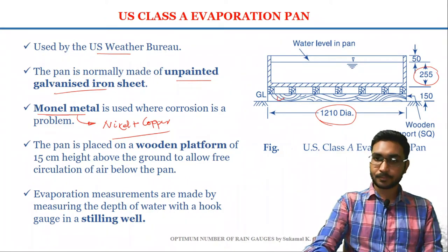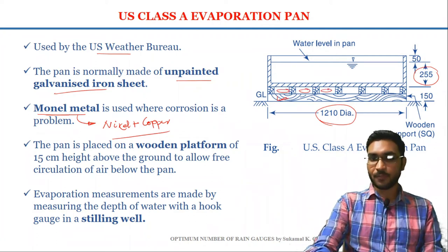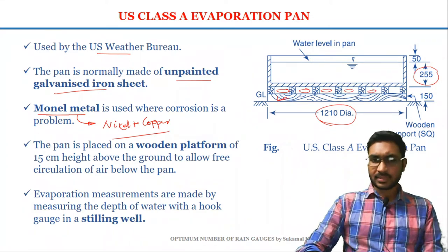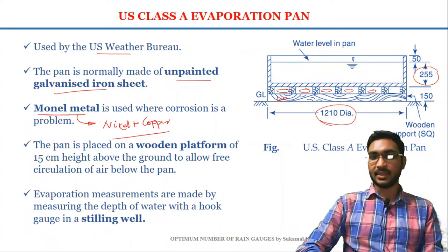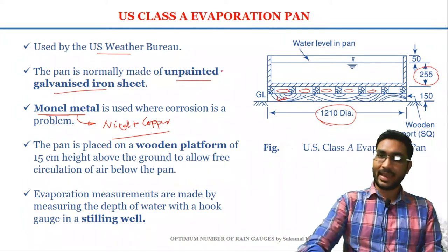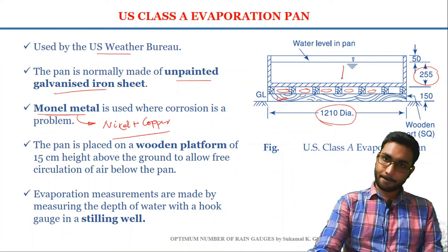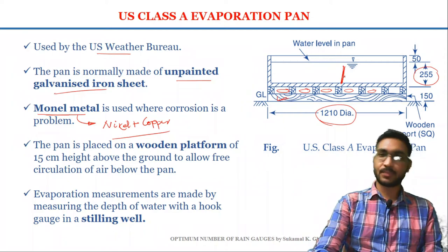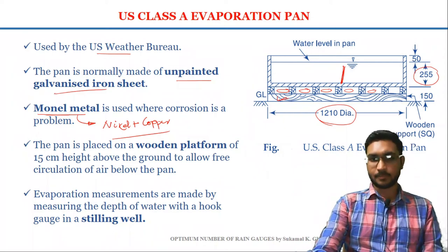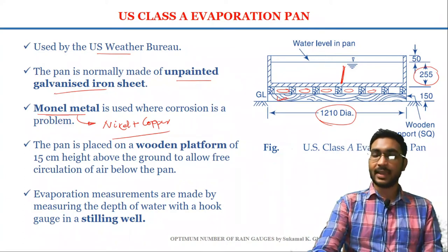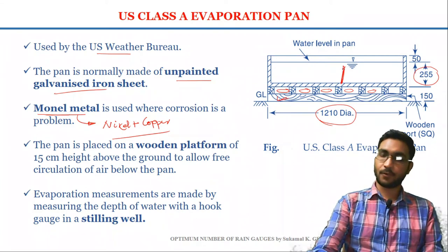This pan is placed on a wooden platform so that it allows free circulation of air below the pan. The evaporation measurements are made by measuring the depth of water with a hook gauge in the stilling well. A stilling well is provided inside the pan, and by measuring the depth of water with the hook gauge in the stilling well, we can estimate the evaporation from this particular pan.